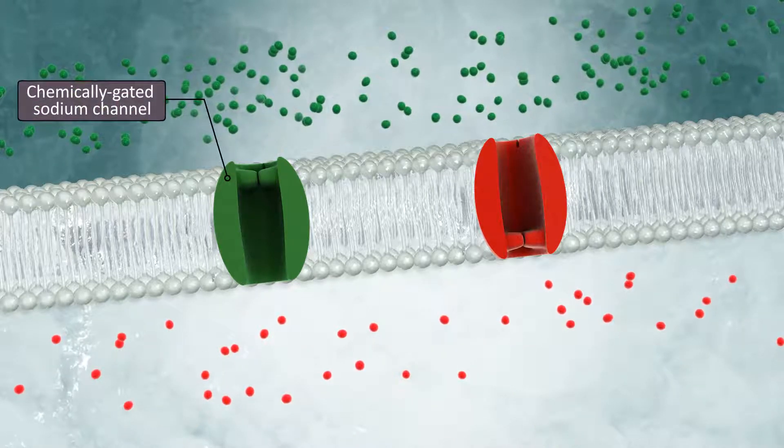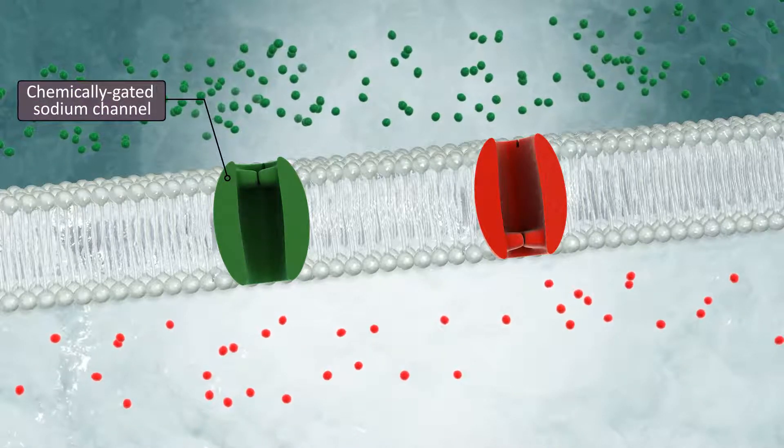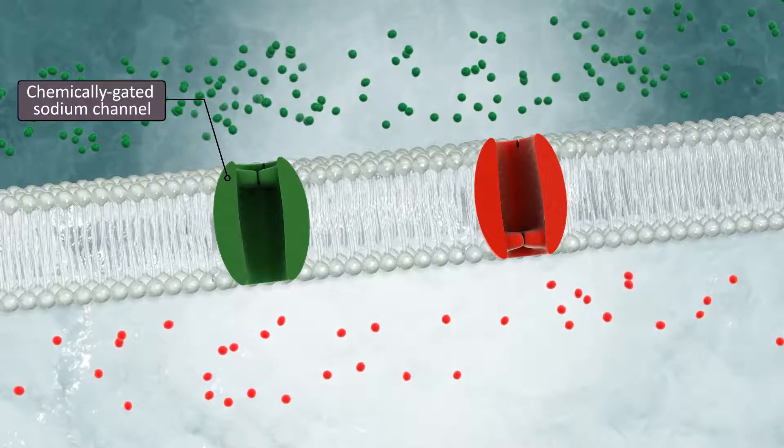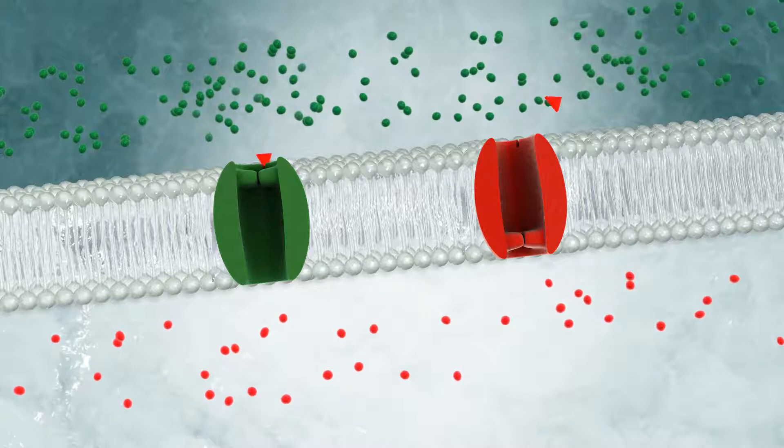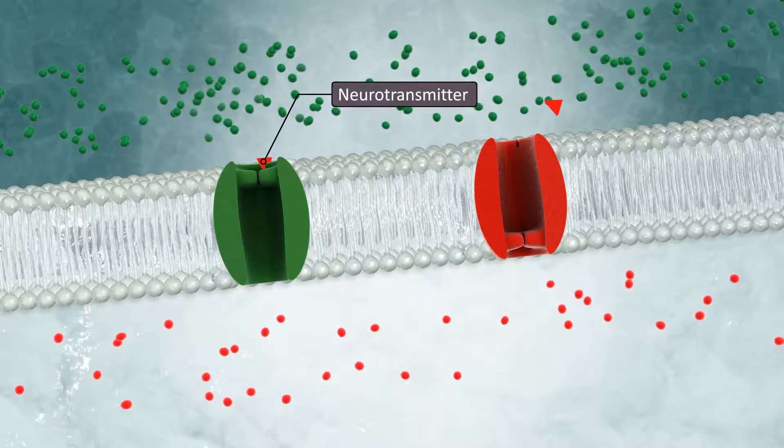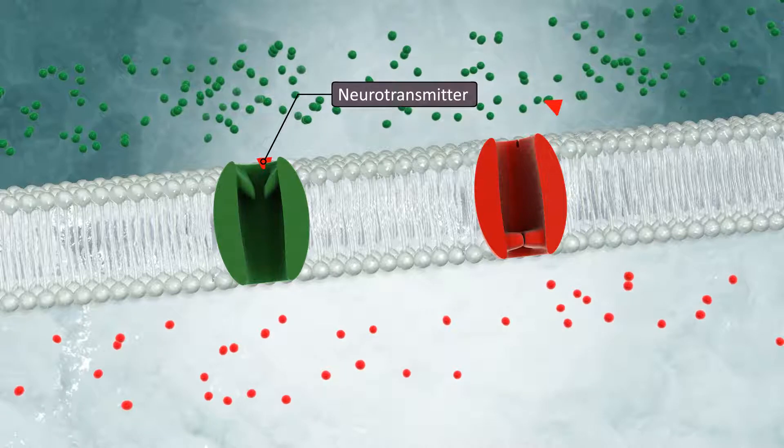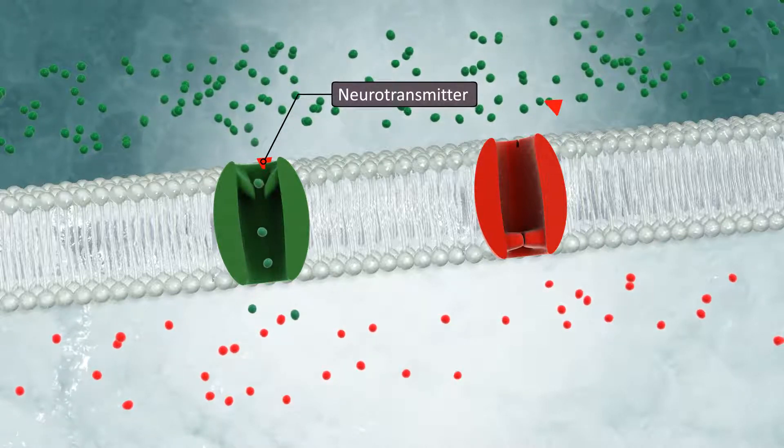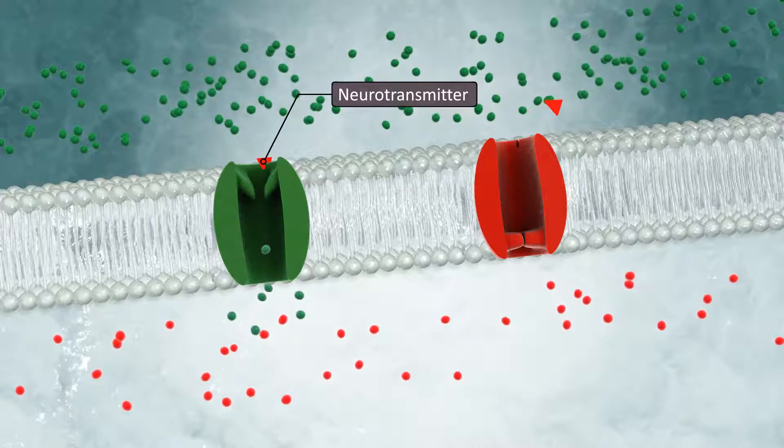A chemically gated channel, also referred to as a ligand gated channel, has a receptor associated with it. When its receptor is occupied by a chemical known as a neurotransmitter, the gate on the channel opens, allowing a specific type of ion to diffuse through. The gate will remain open as long as the receptor is occupied.